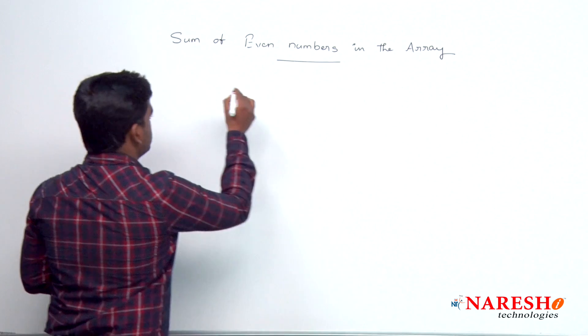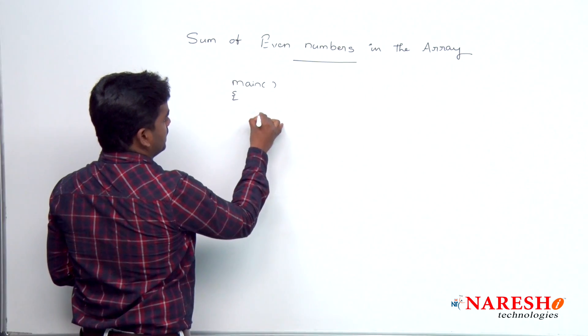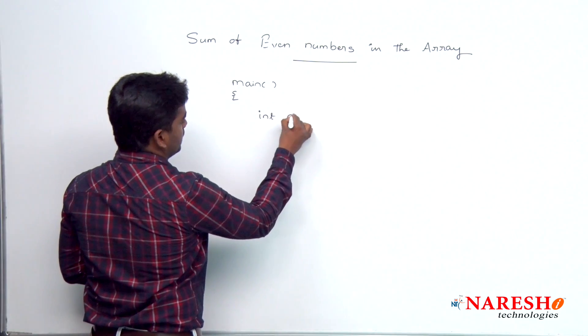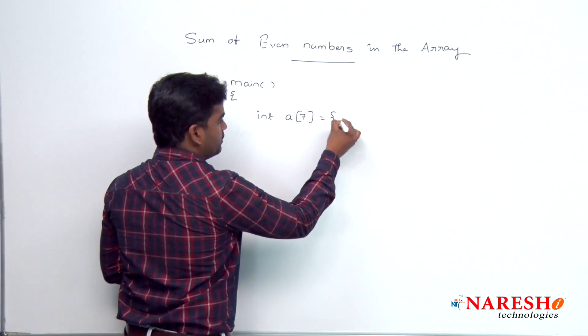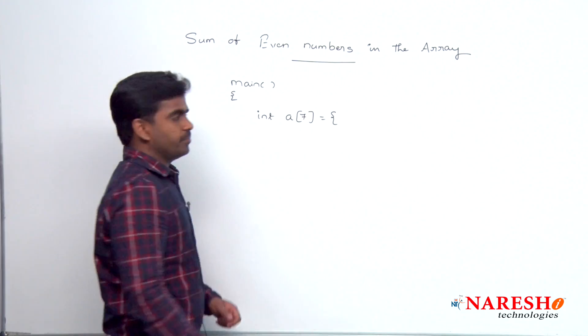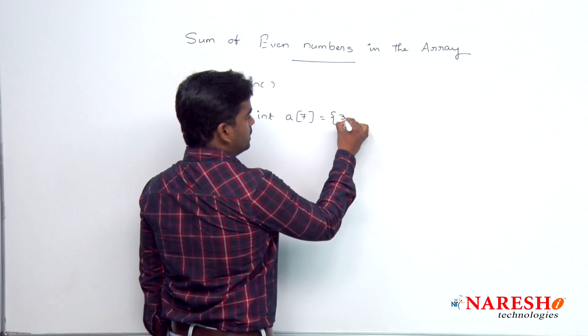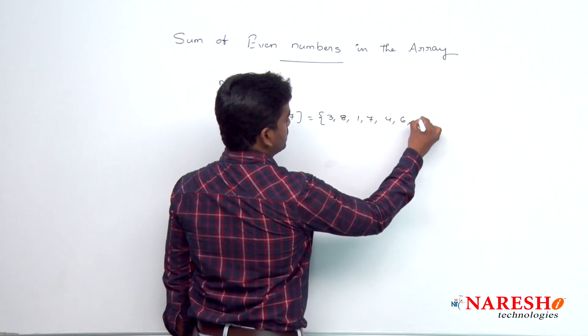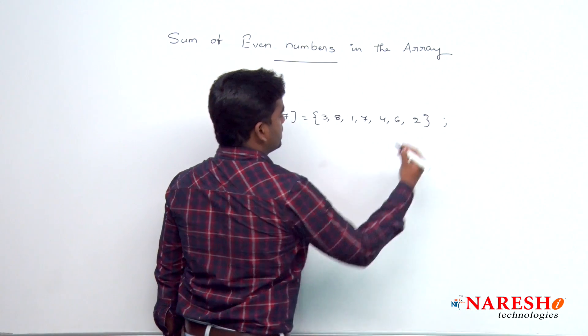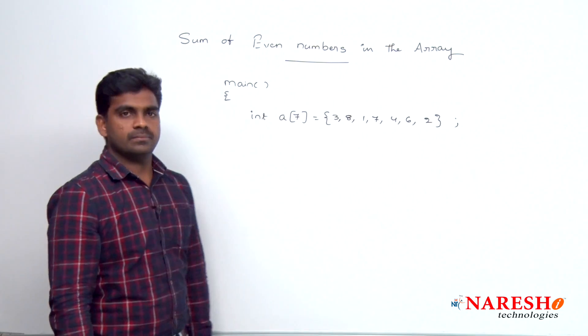So first we are taking one array, int a and here it is size, any size we are taking for example, 7 and we are taking 7 elements. For example, 3, 8, 1, 7, 4, 6, 2 like this, 7 elements we are taking.